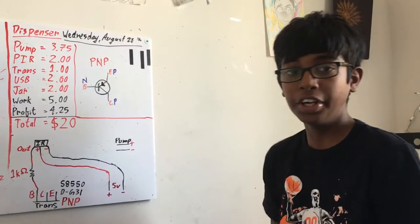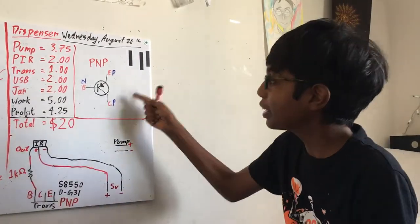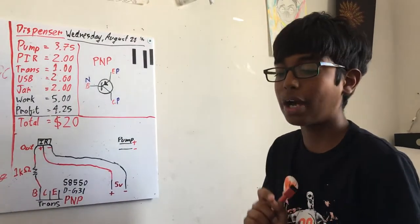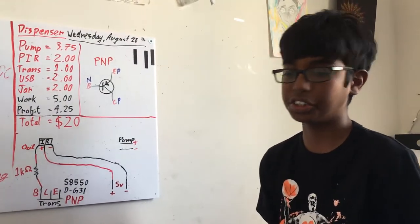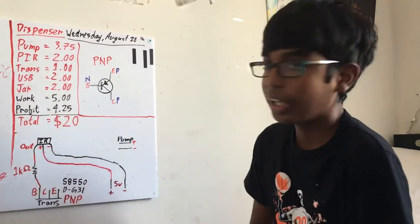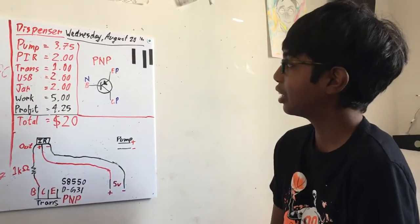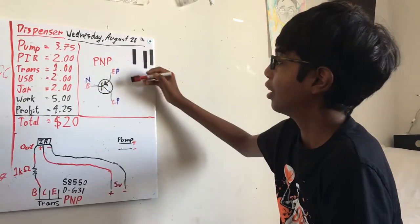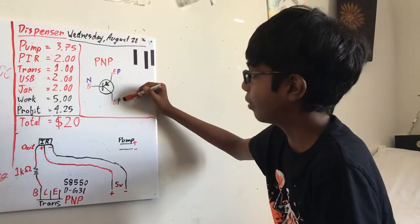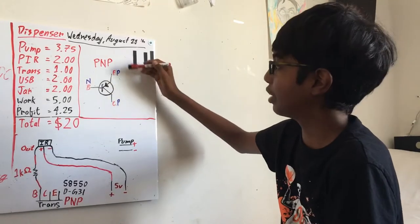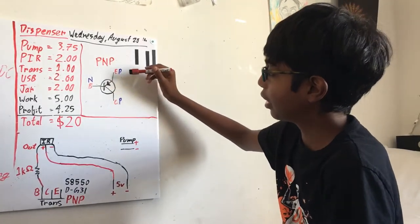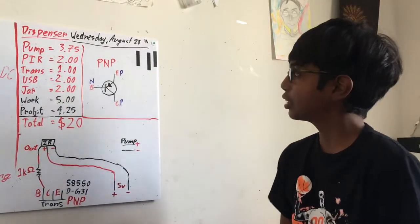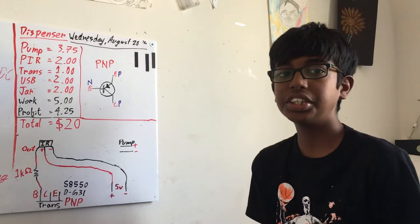Hey guys, welcome to my video. Today I'm going to explain specifically about transistors, particularly the PNP transistor junction. In a PNP transistor, there is a collector, the base, and the emitter. The collector and emitter are always positive, and the base is negative.